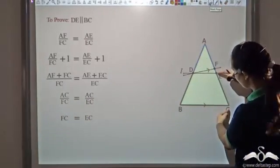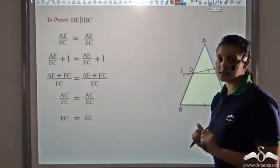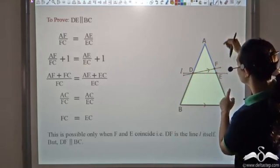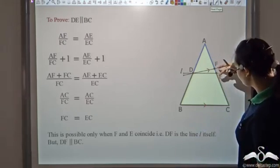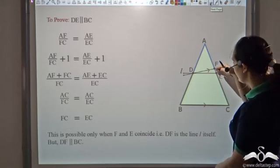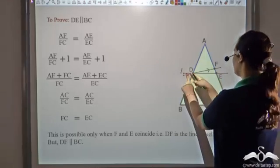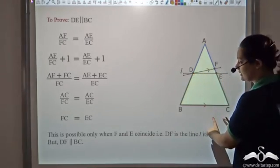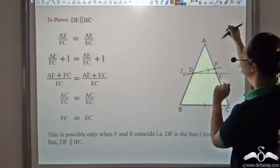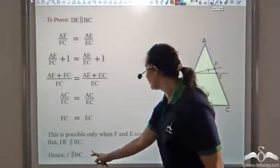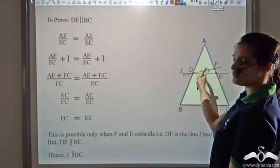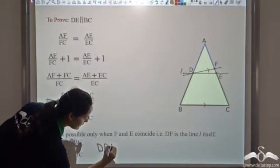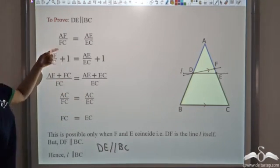Since FC equals EC, points F and E are the same point. Since we assumed DF is parallel to BC, and F and E coincide, it follows that DE is parallel to BC. Therefore line L, which is DE produced, is parallel to BC — and this is precisely what we wanted to prove.